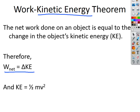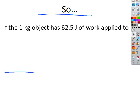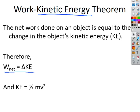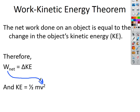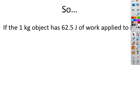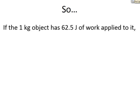If I know the work done on the object, I can eventually figure out how fast that object will go after that work is applied. If there is a 1-kilogram object that has 62.5 joules of work applied to it, we can figure out how fast it has gone if it starts at rest.